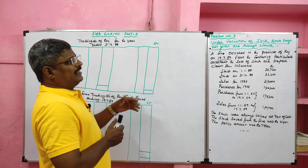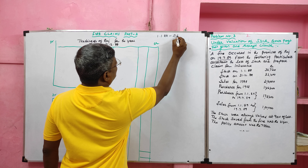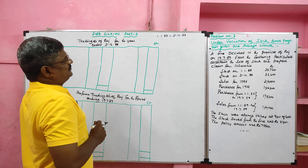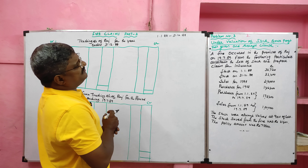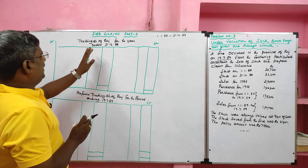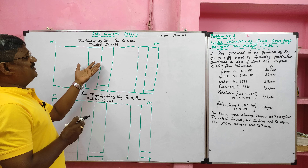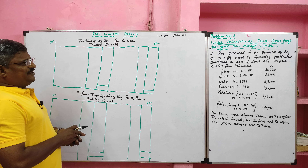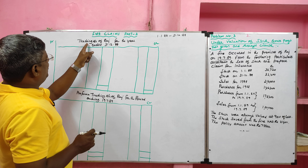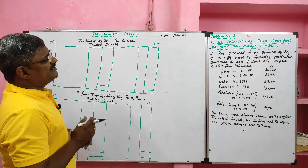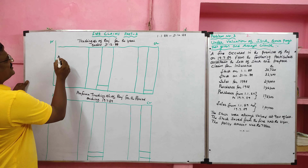The previous year runs from 4th January 1988 to 31st December 1988. We have to prepare a trading account of Raj for the year ending 31st December 1988 to ascertain the gross profit of the previous year. This gross profit should then be converted into a gross profit ratio, which we will then apply to prepare the pro forma trading account for the fire period.